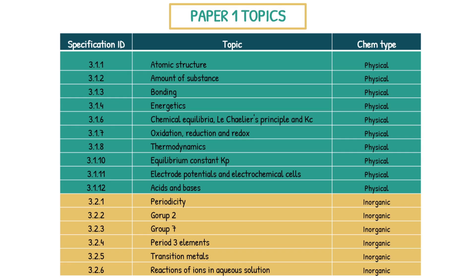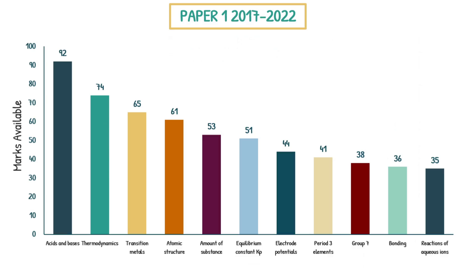So, this on the screen right here is every topic that can be introduced to you in a question from paper one. We have all the physical topics, and then in yellow you have all the inorganic topics. There's a lot of content here, right? So I'm going to save you some time. Let's look at which topics you should focus on to get the biggest return on investment in terms of your time in revision.